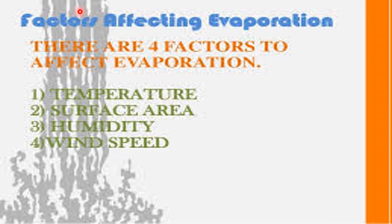Now children, factors affecting evaporation. There are four factors which affect evaporation. Temperature — if the temperature is high, evaporation will be more, and if it is less, evaporation will be less. Surface area — if surface area is wider, there is more evaporation. Humidity — if air is already holding moisture, the evaporation rate will be slow; if the air is dry, the rate of evaporation will be high. Wind speed — if wind speed is slow, the evaporation rate will be slow, and strong dry winds promote evaporation. Wet clothes dry more quickly on a windy and sunny day than in calm conditions.